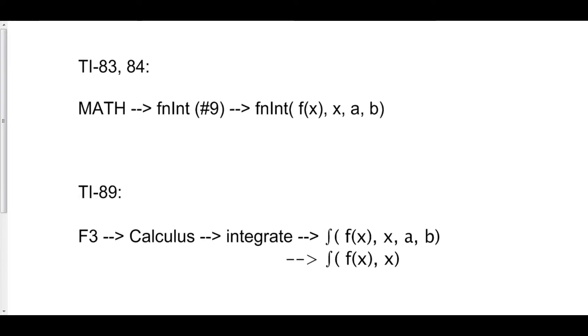So for example, if you're taking the integral from zero to pi of sine of x dx, what you will type into your calculator is fnint, sine x, comma, x, comma, zero, comma, pi. And your calculator should tell you 2.